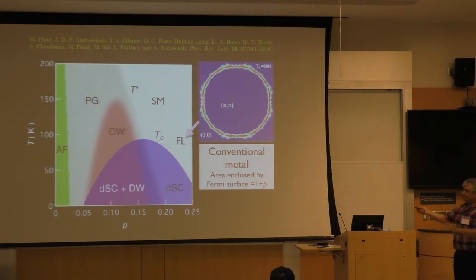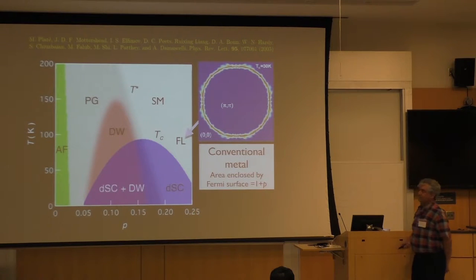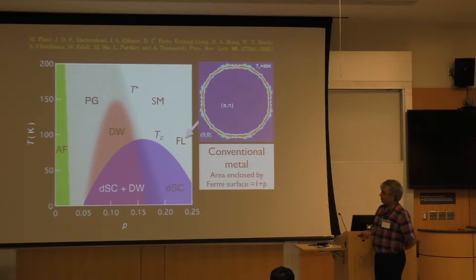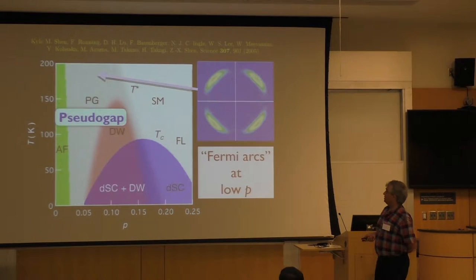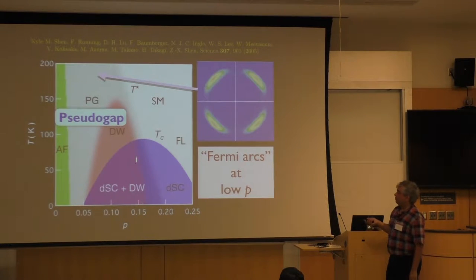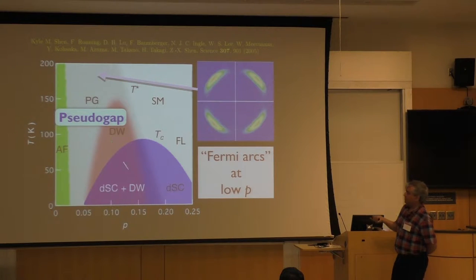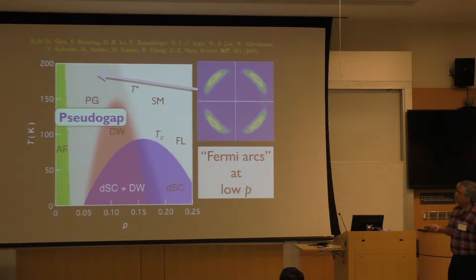So there you do have band theory seeming to work very well — quantum oscillations and many other things. So a lot of the debate has to do with this PG region. And this is the kind of thing you see in photoemission. There's been a huge amount of work on broken symmetries and density wave order — that's what DW stands for in this shaded region.